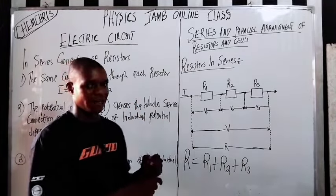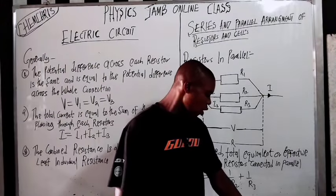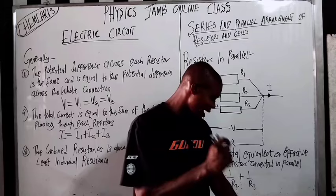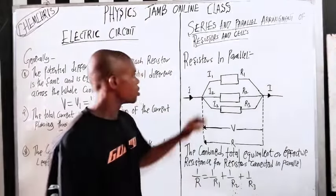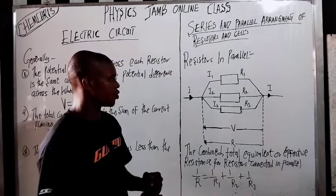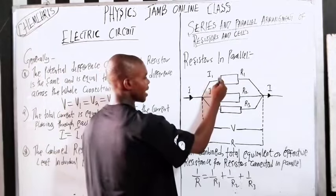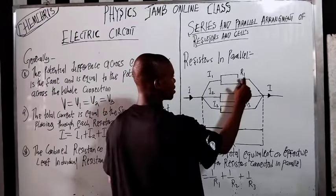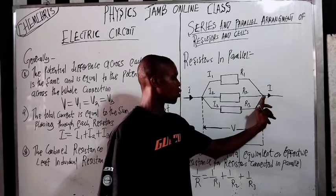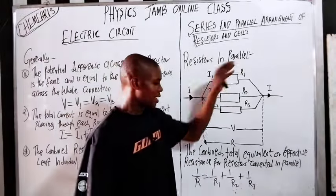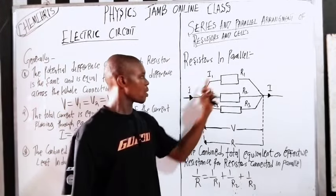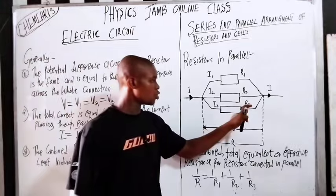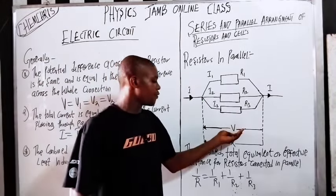Now let's look at resistors in parallel. Resistors are connected in parallel when all the positive ends of the resistors are connected to one point and all the negative ends are connected to another point. It's called parallel connection. If you check, all the negative points of the three resistors are connected to one point, and all the positive ends are connected to one point. The current is not the same — it splits — but the voltage will be the same.